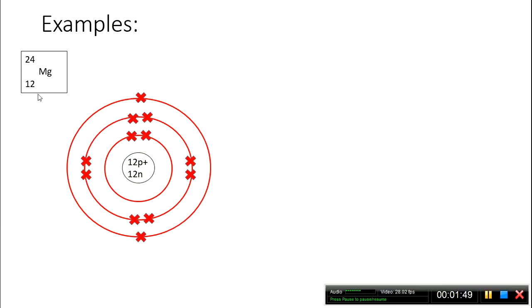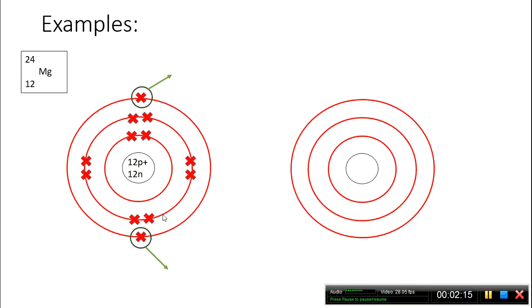So how does this get a full outer shell of electrons? Well, there's two things that can happen here. Either these two electrons can be given away so that the outer shell disappears, and the second shell here becomes the outer shell, and that's then full. Or it could gain six electrons. Now, it's more energetically favorable to lose two electrons than to gain six. Basically, it takes less energy to do that. So let's draw that. So those two electrons are going to be given away. We'll still have the same number of protons and neutrons in the nucleus. I haven't done anything with that. And I've got the electrons that are left over. The outer shell disappears.